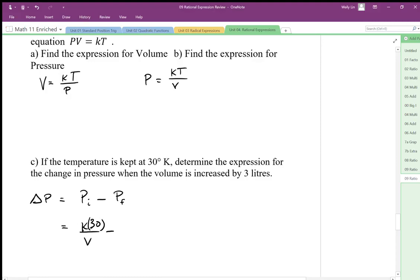k is a constant, but we won't get into that. The temperature is kept constant at 30, but the volume is increased by 3 liters. So the initial pressure is 30k over V, and the final pressure is 30k over V plus 3.